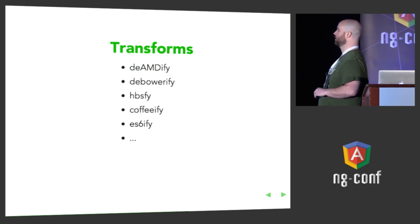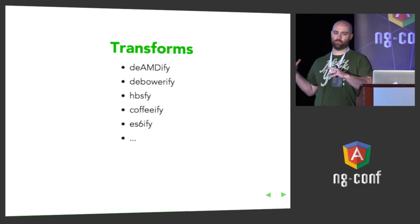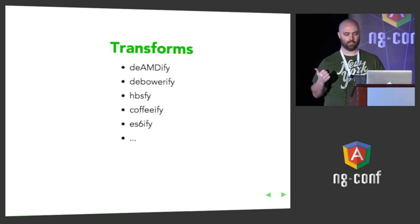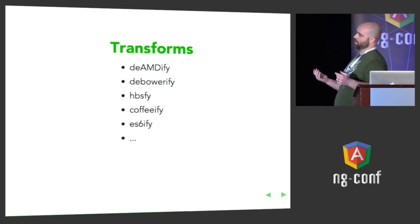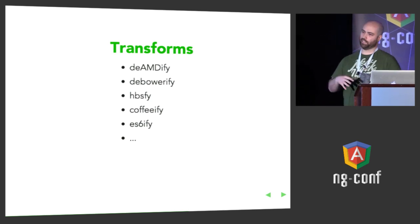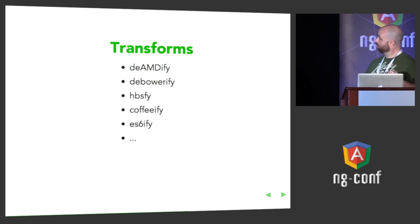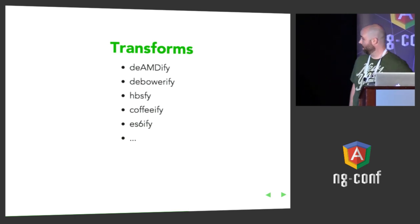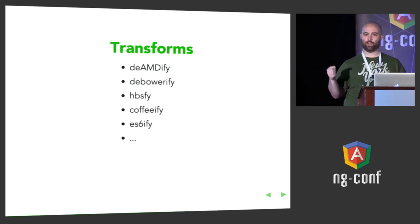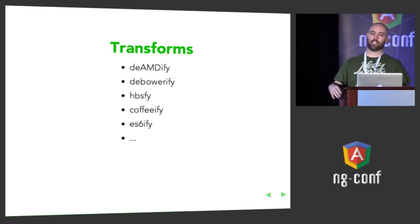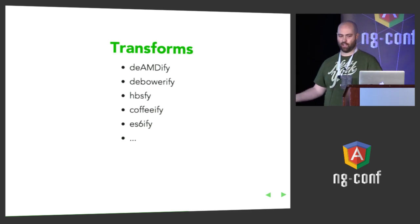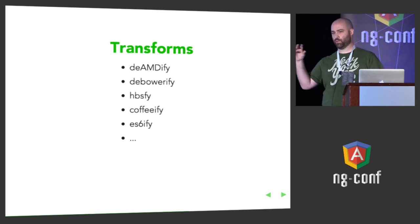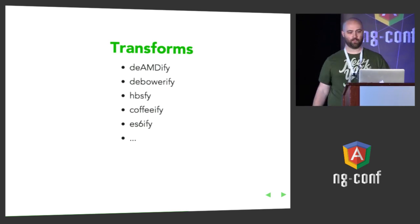Transforms are where things start to get a little more interesting. They transform your code before it gets inserted into the bundle. There are tons of transforms out there — these are just a couple of interesting ones. DA, DFI, and Dbowerify let you use modules written for those systems directly in your Browserify code without touching anything. HBSify is a transform that will pre-compile Handlebars templates for you — you just require your template file and as part of the bundle it'll pre-compile it. Coffeeify compiles your CoffeeScript. ES6ify is a transform that lets you write an ES6 module and transpiles it for you during bundling. And there's tons more.